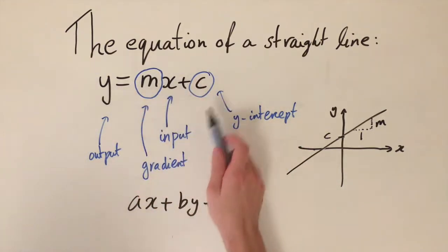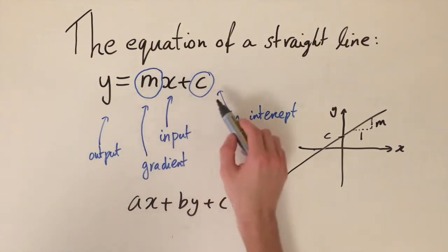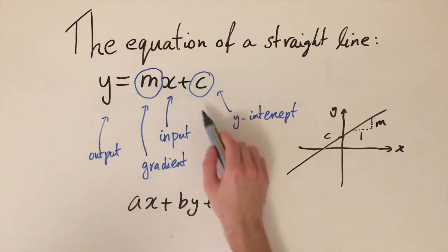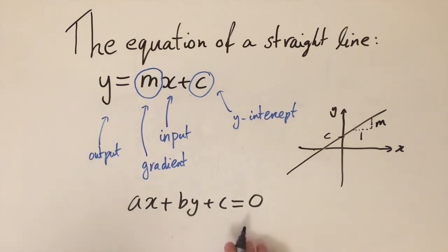Typically you'd prefer to have this because if you're given this equation, you can just read off what the gradient and the y-intercept are. So a common problem would be if you're given an equation in this form, how can you rearrange to get back into this? So we're going to look at a few examples.